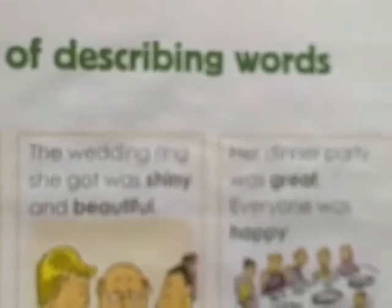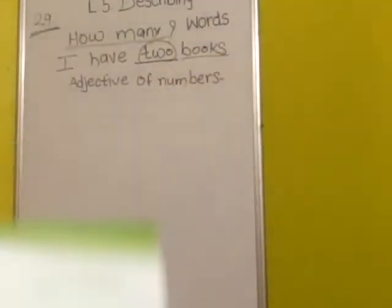Next: the wedding ring she got was shiny and beautiful. So wedding ring is the noun, and shiny and beautiful are the describing words for that noun. Next: the dinner party was great, everyone was happy. 'Happy' is the describing word for everyone, and 'great' is the describing word for dinner.